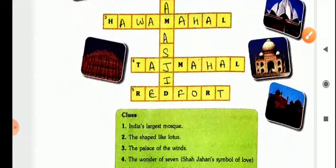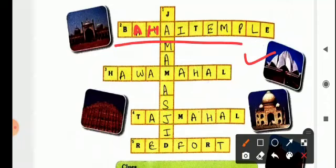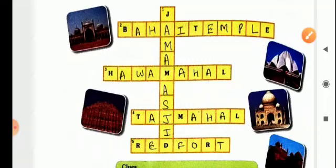Second clue is, the shape like lotus. It is basically lotus temple, you can see the picture, but it is also known as Baha'i temple. B is written, A, H, A of Jama is already written, and I. Baha'i and temple T is written, E, M, P, L and E is already written.